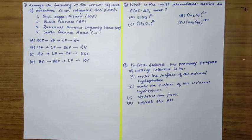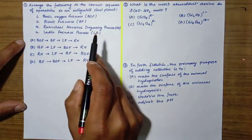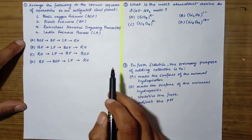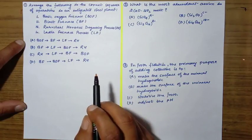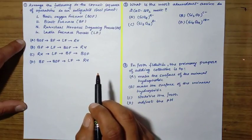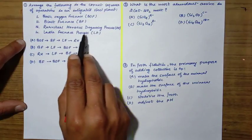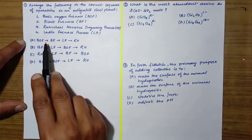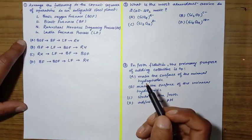Hello everyone, today we will discuss the problems which were asked under extractive metallurgy. The first question is: arrange the following in the correct sequence of operations in an integrated steel plant. First is basic oxygen furnace, second is blast furnace, third is RH degassing process, fourth is ladle furnace.